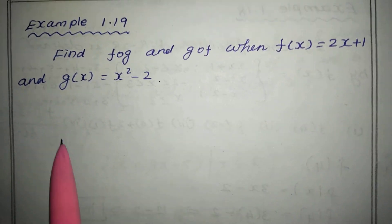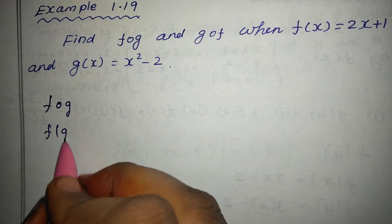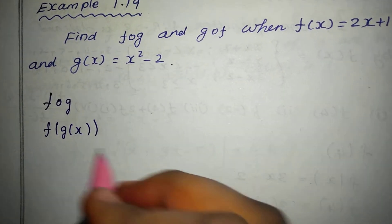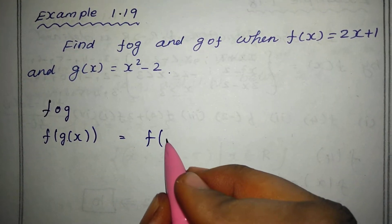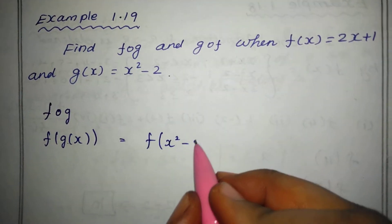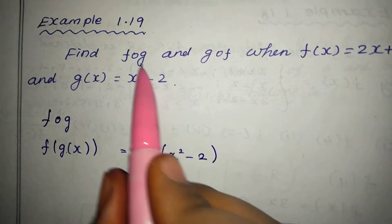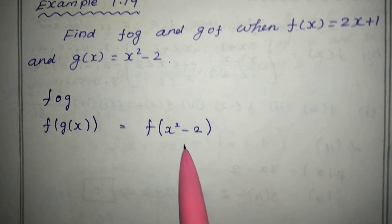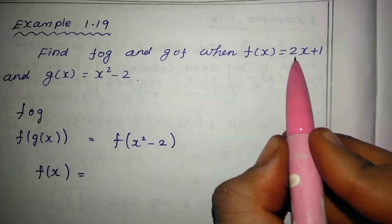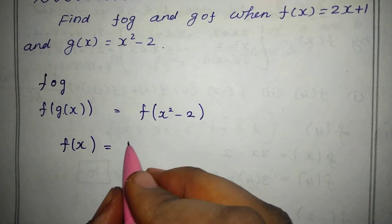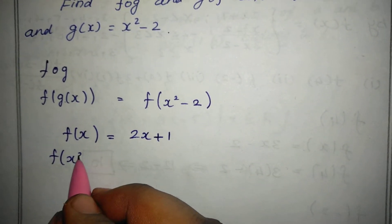First, we have to do f of g. So f of g of x — here g of x is equal to x square minus 2. Now, f of x is equal to 2x plus 1, so we have to compute f of x square minus 2 by substituting g of x into f.